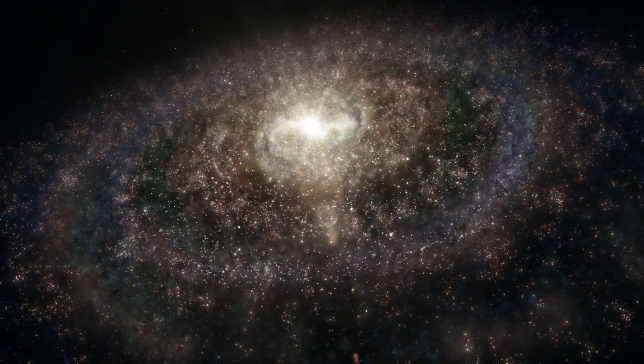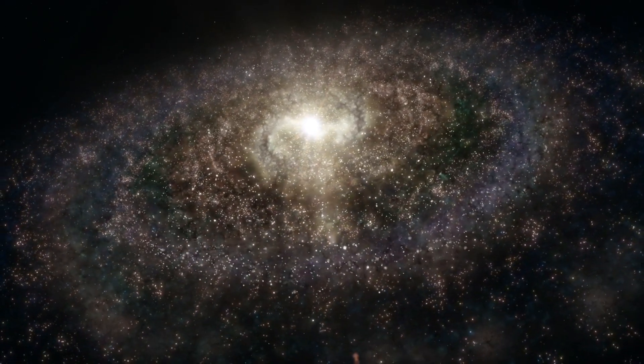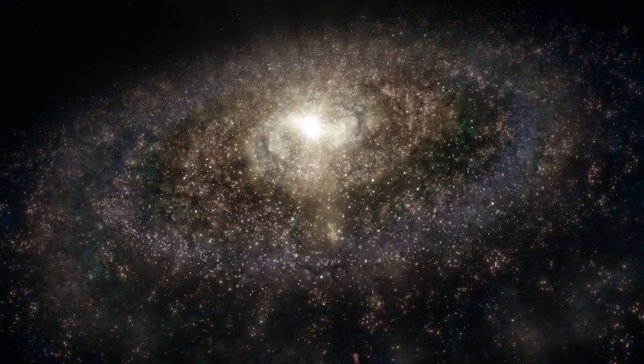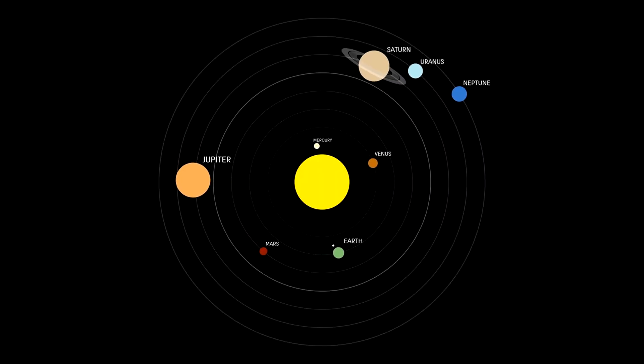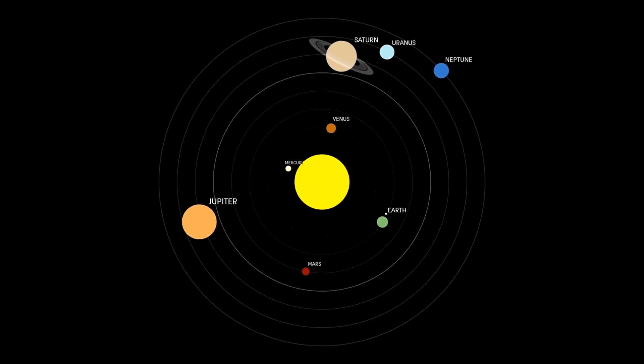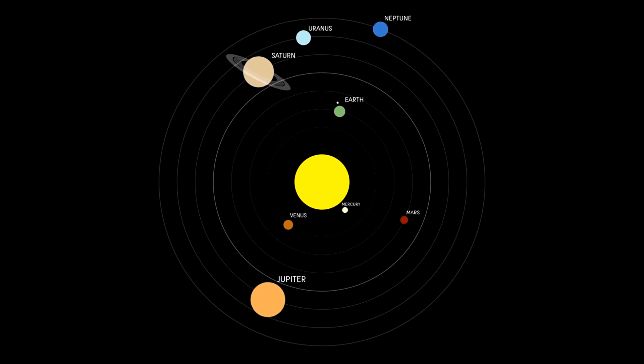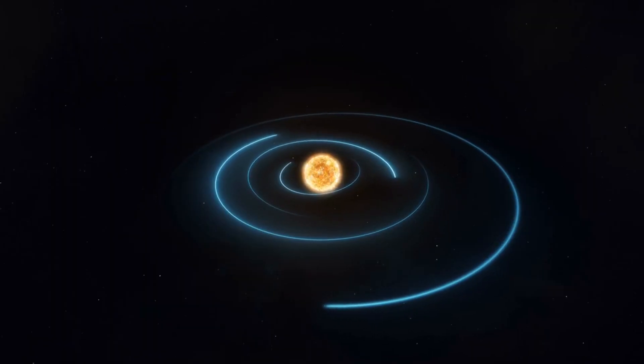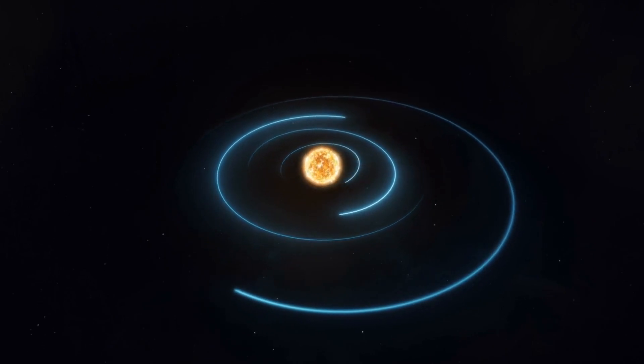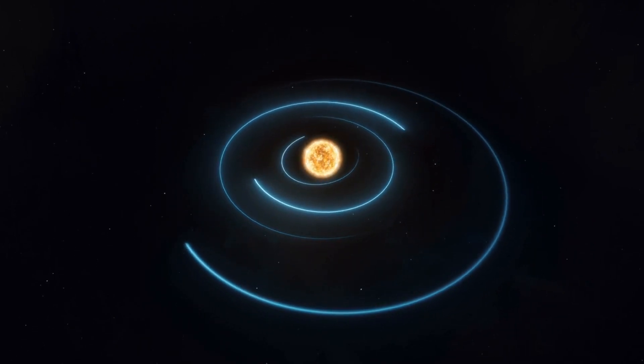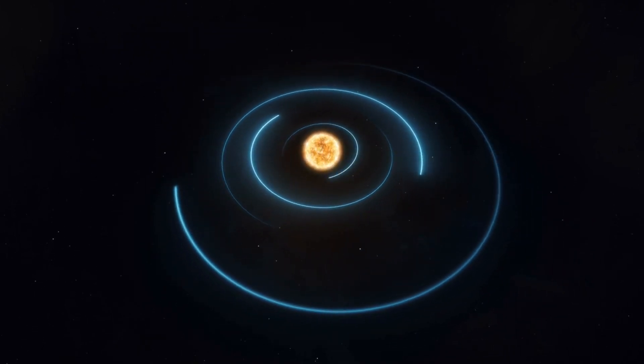But an even more fascinating question is, how did we even figure this out? Traditionally, we've understood our solar system as a neatly ordered system where planets orbit the sun in a nearly flat plane. This model, known as the Copernican model, places the sun at the center, with planets tracing out circular or elliptical orbits in a two-dimensional plane.